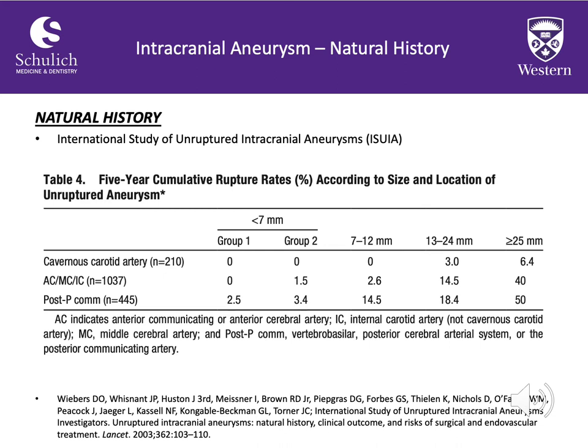For patients with no history of subarachnoid hemorrhage and aneurysms less than 7 mm in diameter (Group 1), there were no ruptures among anterior circulation aneurysms, and the risk for posterior circulation rupture was approximately 2.5% per year. In contrast, patients with a positive history of subarachnoid hemorrhage and aneurysms less than 7 mm (Group 2) had an anterior circulation rupture risk of 1.5% per year and posterior circulation risk of approximately 3.4% per year—confirming that prior SAH history is a key rupture predictor.